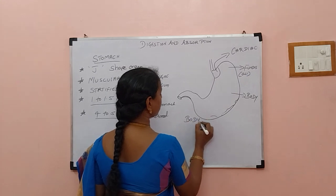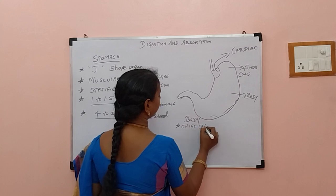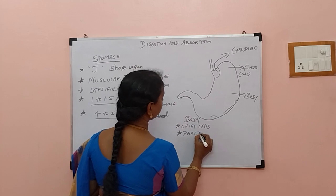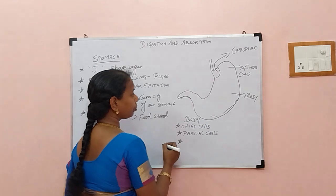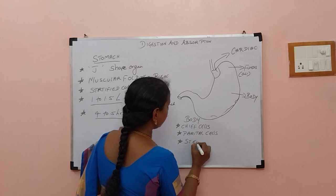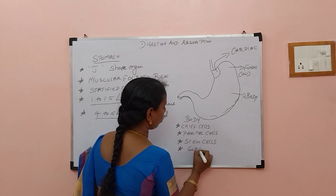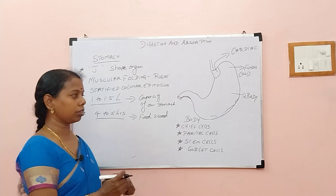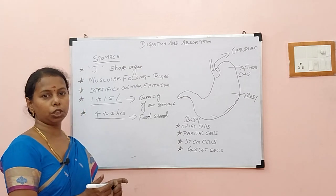Then this region we call the body, and in the body we have various kinds of cells. We have chief cells and parietal cells. We also have some stem cells for rejuvenation, and goblet cells for mucus secretion. Every two weeks the mucus lining is changed in the stomach because of the goblet cells — so rejuvenation is possible.